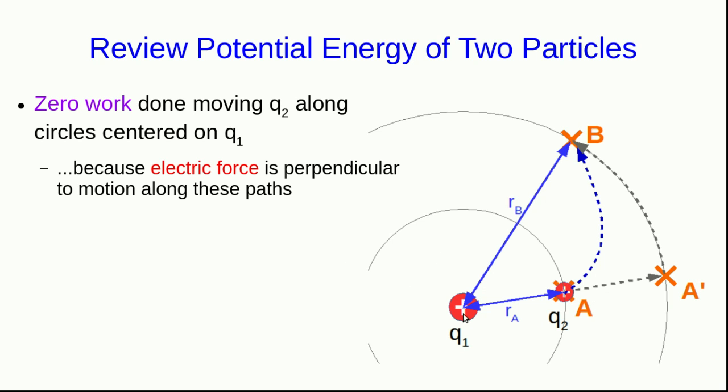And we know that because the electrical force acting on Q2 must point radially outward from Q1. And so it's perpendicular to the motion any time we move it along a circular path, like this one from A' to B, or this other circular path on this inner circle.